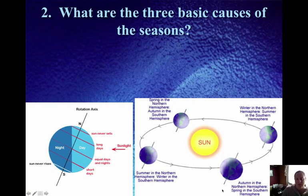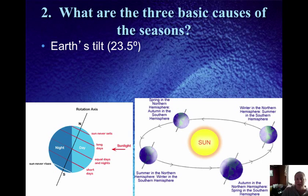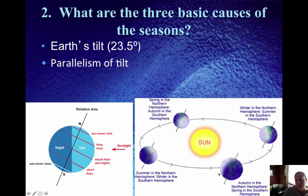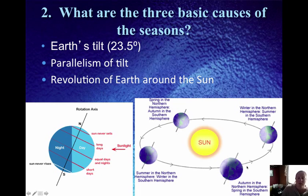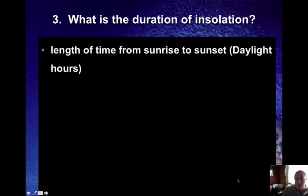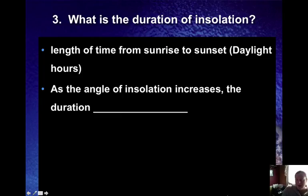The three basic causes of the seasons: first, Earth's tilt — Earth is tilted 23.5 degrees. Second, parallelism of tilt — Earth's tilt is 23.5 degrees all the time, keeping the tilt parallel in each position of Earth's orbit. Third, the revolution of Earth around the sun. Those three factors are what cause the Earth to have seasons. Duration of insolation is the length of insolation or sunlight — the length of the day, from sunrise to sunset.